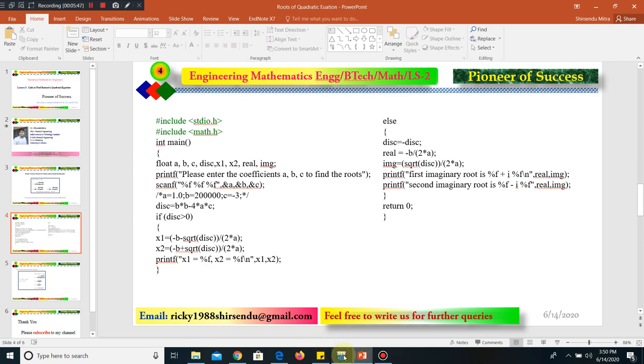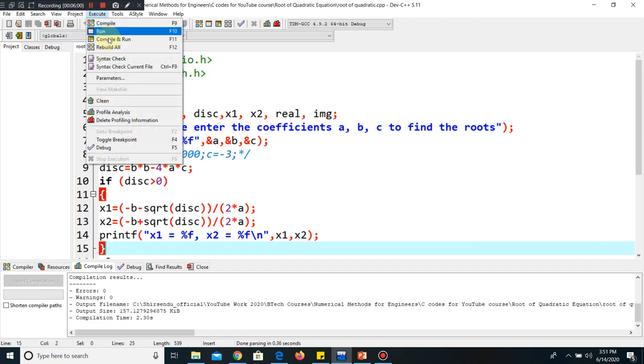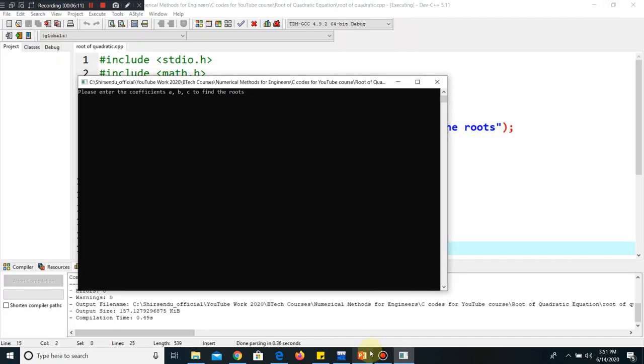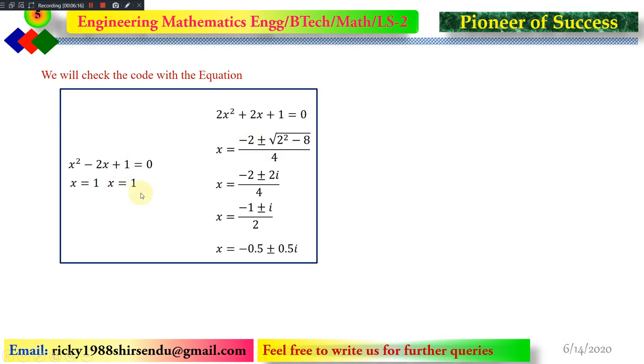Now I am going to see the interface. Here the code is written. As I have already explained the code to you, I am not going for further explanation. I am right away going to execute the code. So I go to execute, click on compile and run. The code is being run. Now you can see it is asking please enter the coefficients a, b, and c. I have taken two equations I will show you here. These two equations I will be solving. The first one is x² - 2x + 1 = 0.